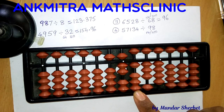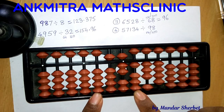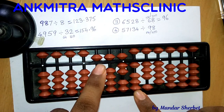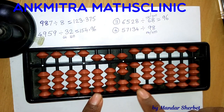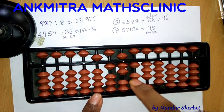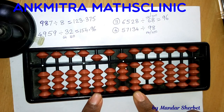571 is on the hundreds place of the question set, so our answer will start on the hundreds place of the answer set. From 571 we can subtract 5 times 98, which is 490. I'll take 5 on the answer set and subtract 490 from 571: plus 1 minus 5 here, plus 1 minus 10 for subtracting 9, and 0 on this rod. We're left with 81, which is smaller than our divisor.